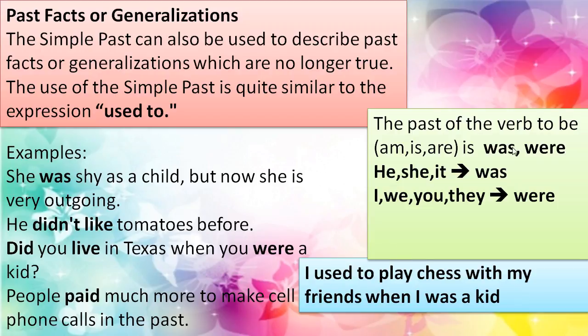The past forms of the verb to be — am, is, are — become was and were. So: he was, she was, it was, we were, you were, they were. Thank you for watching this video.